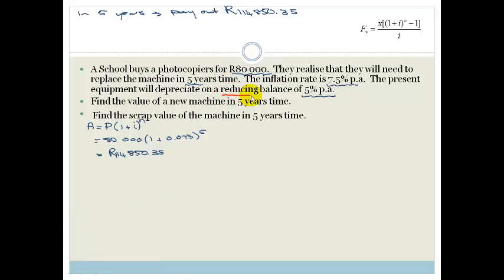Now, we've got a reducing balance depreciation, and this time, it's 5% per annum. So, therefore, we've got A = P(1 - i)^n. Again, this time, your principal is going to be 80,000 because that's what we paid originally, times 1 minus 0.05 all to the power of 5.